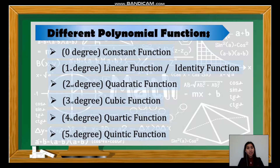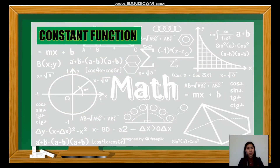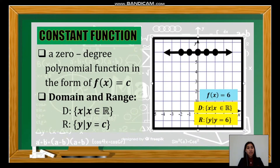Now let's get to know each polynomial function. The first is the constant function. It is a zero degree polynomial function in the form f(x) = c, where c is a constant. The domain is the set of real numbers, while the range is y equals c, which is the constant.